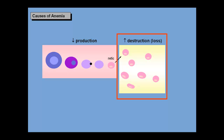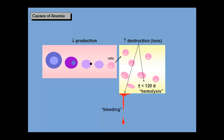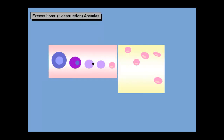There are two major destructive causes of anemia: bleeding and death of the red cells before the usual 120-day lifespan. This premature death is called hemolysis. In either event, you end up with anemia, fewer circulating red cells, abnormally low hematocrit, and abnormally low hemoglobin.